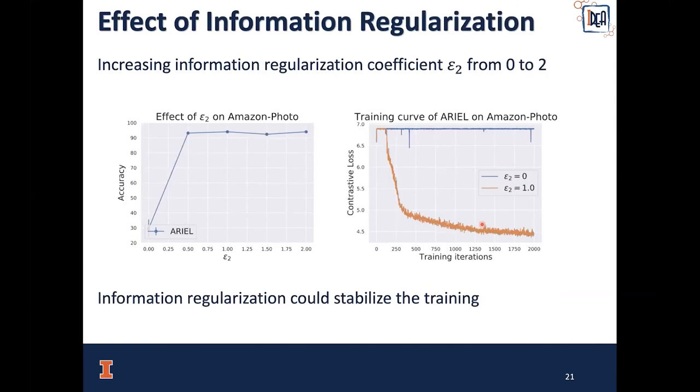Next, we fix all parameters and ablate the effect of information regularization. We have to admit that information regularization is not always needed in our framework because its main purpose is for stability. Here we increase the information regularization coefficient epsilon_2 from zero to two. We can see that on Amazon Photo, introducing information regularization could make the training successful, while no information regularization could make the loss non-decreasing. We can conclude that information regularization could stabilize the training.